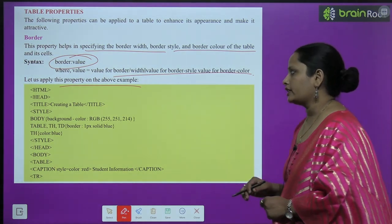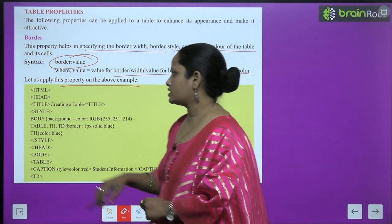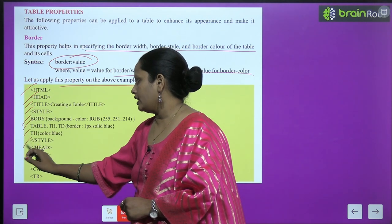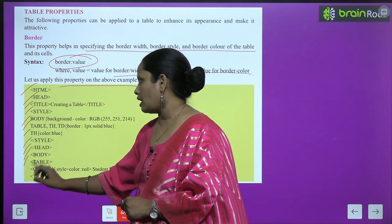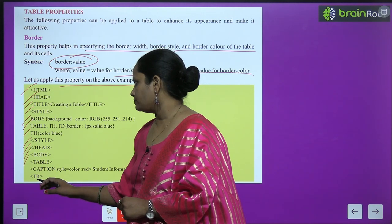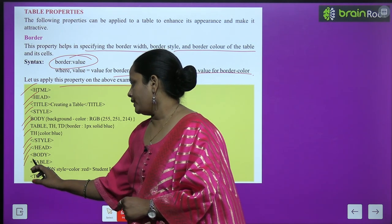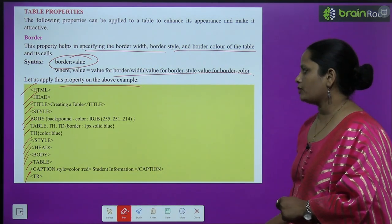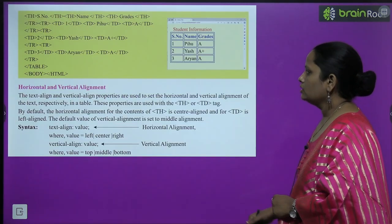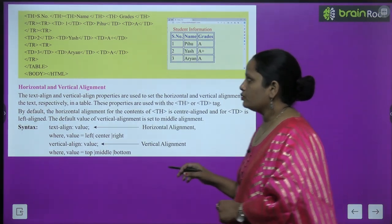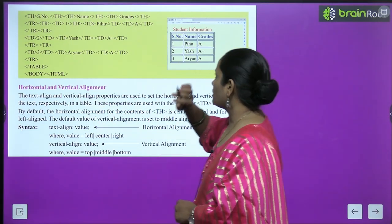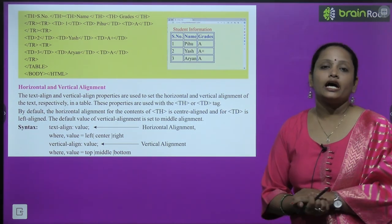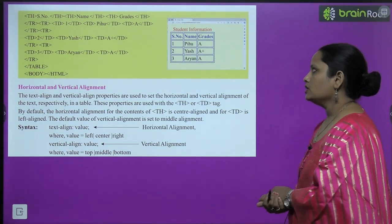We open the table, add caption, add the th tags for student information, and set the border color to blue. We re-enter all the student details. You can see the difference between the table before and the table after applying the border property — this is how you can insert a table with proper border appearance.